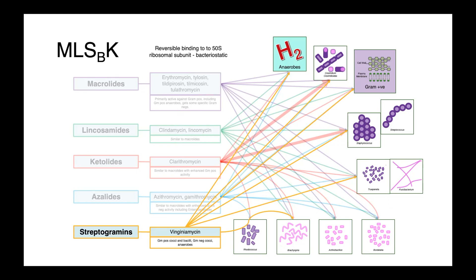The streptogramins, such as virginiamycin, which is really only used in agricultural settings, good activity against anaerobes, gram-positives, including staphs and streps, Trueperella pyogenes and Fusobacterium necrophorum, which frequently cause infections together, as well as Brachyspira. This may be a compound that you reach for when treating intestinal spirochetosis.